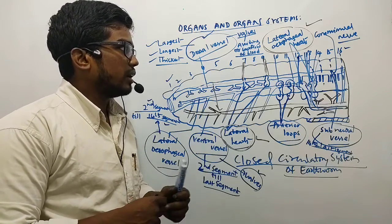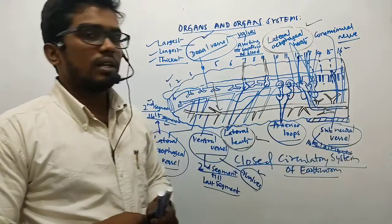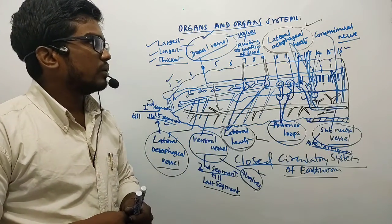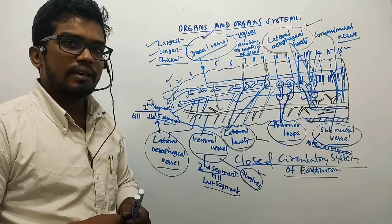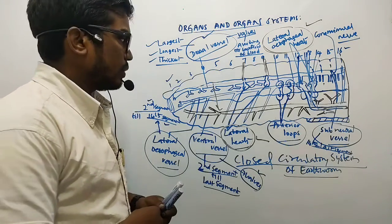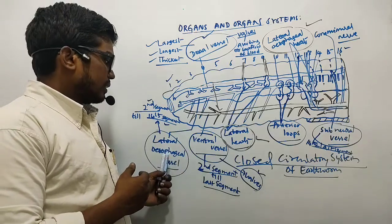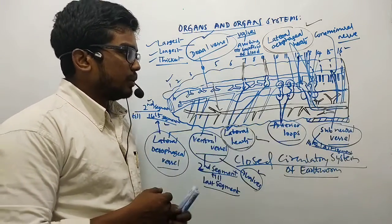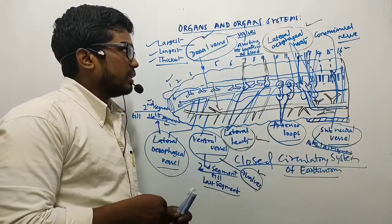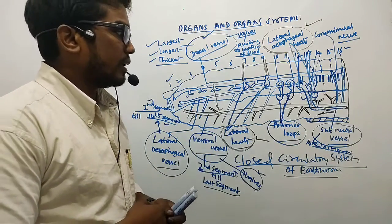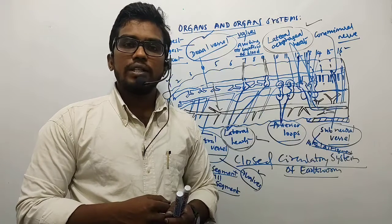There is a commissural nerve passing at the 15th and 16th segments. Students are advised to draw clean diagrams and label all parts. Study the blood vessels in order: dorsal, ventral, lateral esophageal, sub-neural, anterior loops, then the lateral hearts and lateral esophageal hearts. This concludes the circulatory system of earthworm.